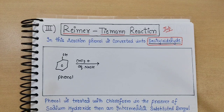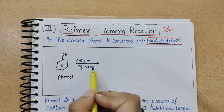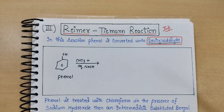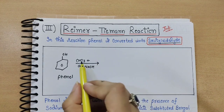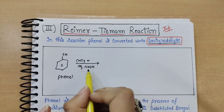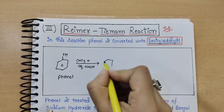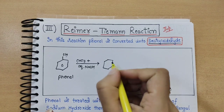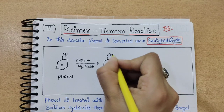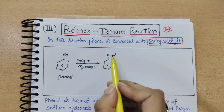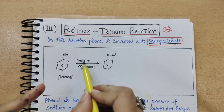Both reactions involve sodium hydroxide. In the Kolbe reaction, NaOH was also involved. The new thing here is that chloroform (CHCl3) is used. Sodium hydroxide reacts and sodium phenoxide is formed — oxygen becomes negative and sodium is positive.